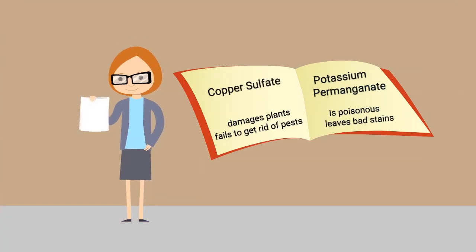Two solutions others tested were copper sulfate, which damages plants and fails to get rid of pests, and potassium permanganate, which is poisonous and leaves bad stains.